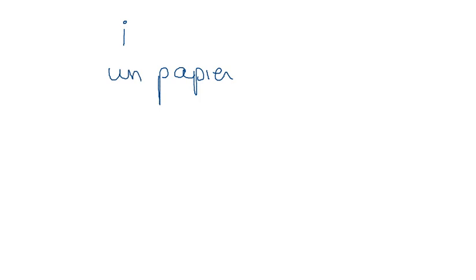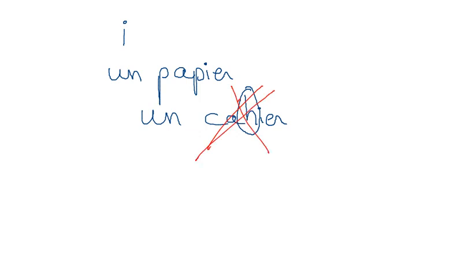So basically the E is just E. For instance: un papier, which means paper. Un cahier, which means a notebook. In French this letter H is never, never, never pronounced. You will never hear a French person say it, and this is why French people struggle at speaking English — if they have to say 'hospital' they will say 'ospital.' So make sure to remember that rule: whenever you see H, you do not pronounce it. It's like it doesn't exist.